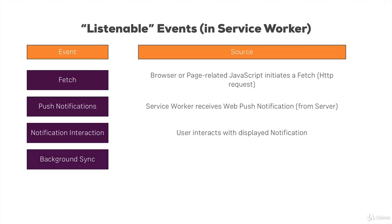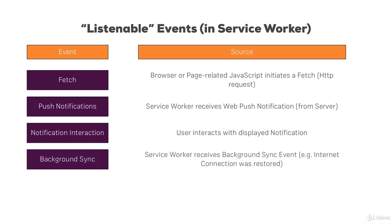Another useful event is background synchronization. Imagine a case where you don't have a good internet connection and you send a post — if the connection is bad, that will fail. Some browsers, mainly Chrome right now, allow you to use background synchronization, which means you store a certain action if it can't be executed right now and execute it once the internet connection is reestablished. The browser that supports background synchronization will emit a certain event to which you can listen in the service worker.